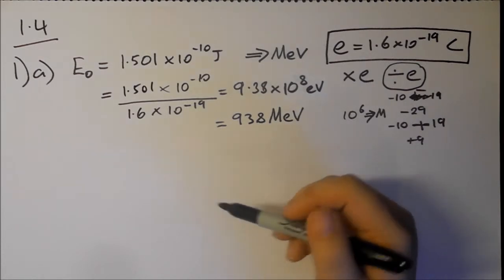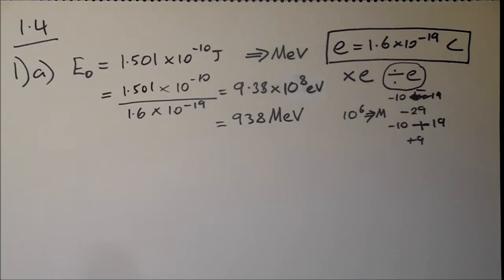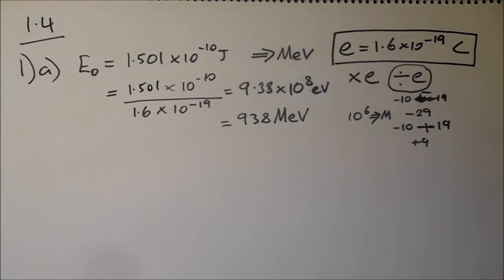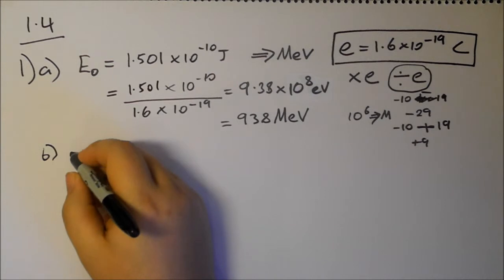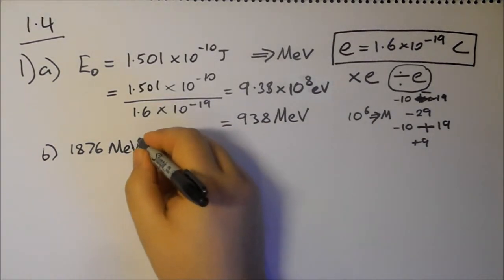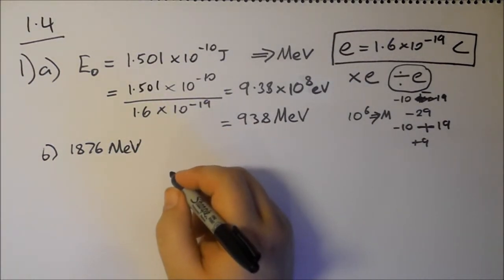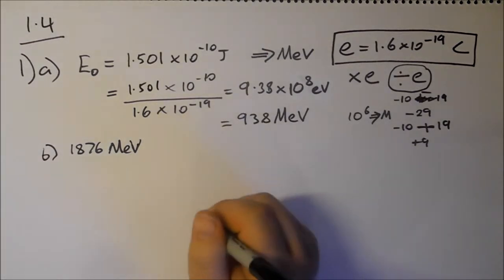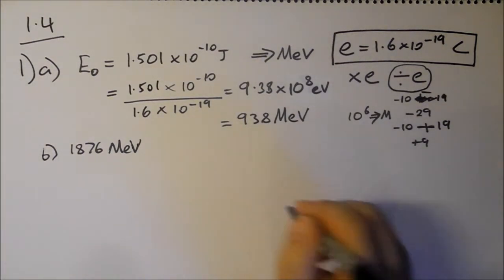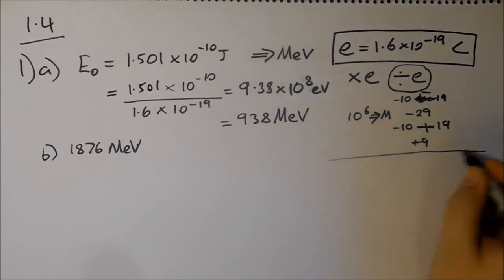The next question, part B: Show that a photon must have a minimum energy of 1876 MeV to create a proton-antiproton pair. How do we create a proton-antiproton pair? For pair creation, we have an equation which is found on page 11 of the book.